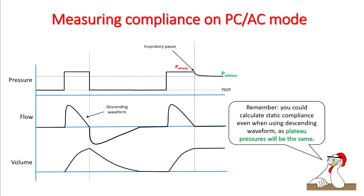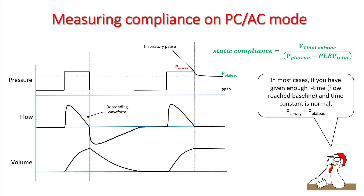On a PCAC mode, you can perform an inspiratory pause and get a plateau pressure. Similarly, as in VCAC mode, you can figure out static compliance by dividing tidal volume by plateau minus PEEP, which is the driving pressure. Remember that the static compliance does not change even when you use a descending waveform. In most cases with pressure control, if you have enough inspiratory time where the flow reaches the baseline and your time constant of the alveoli is normal, PEEP airway will be similar to PEEP plateau. However, in all other conditions, plateau will be slightly lower than airway, so perform the inspiratory pause to calculate the accurate static compliance.